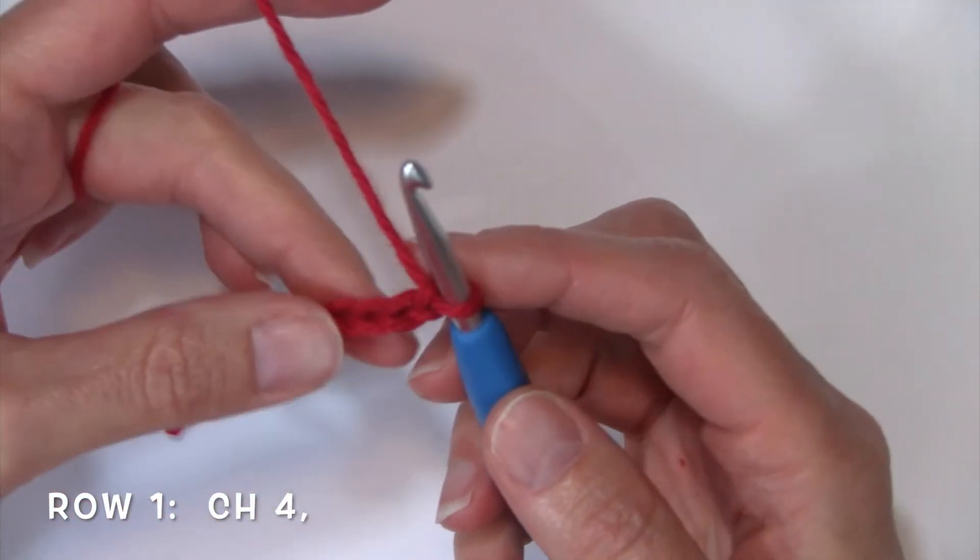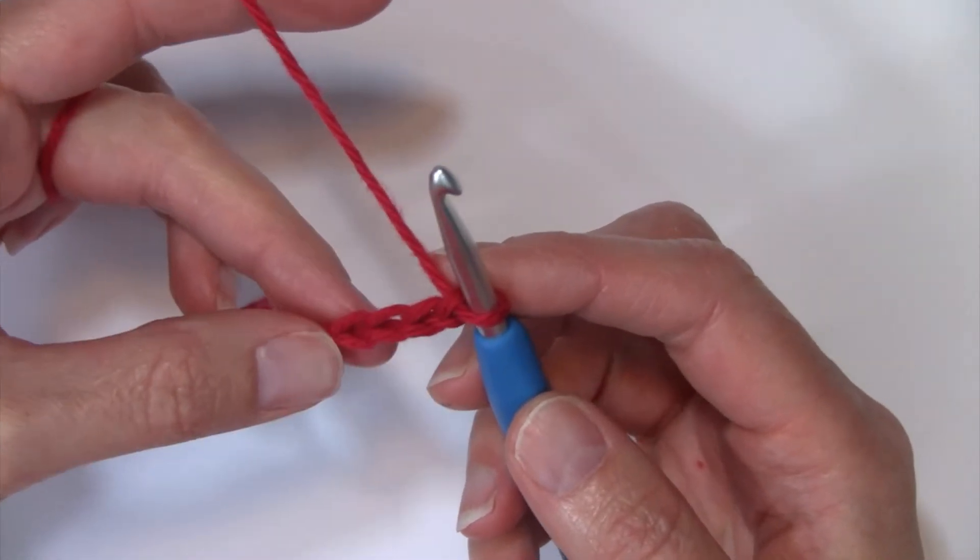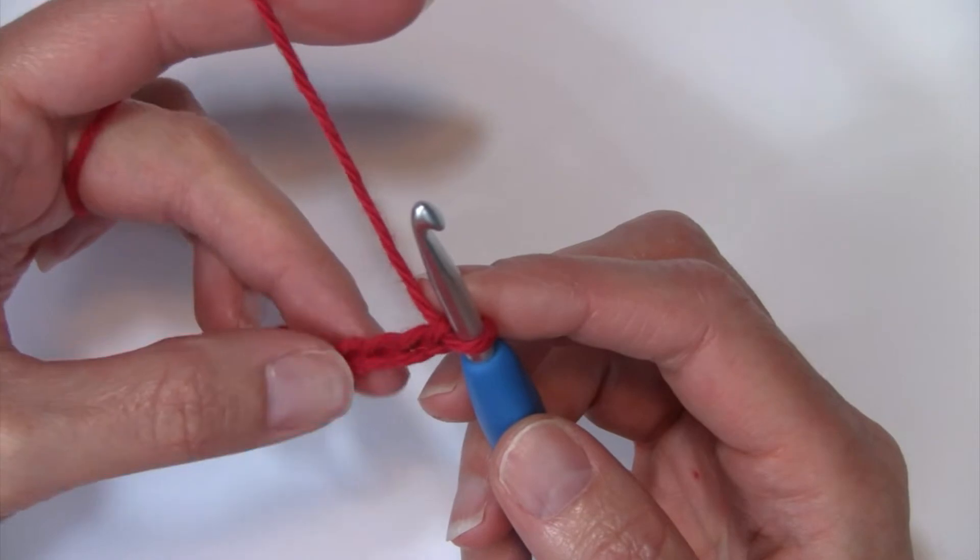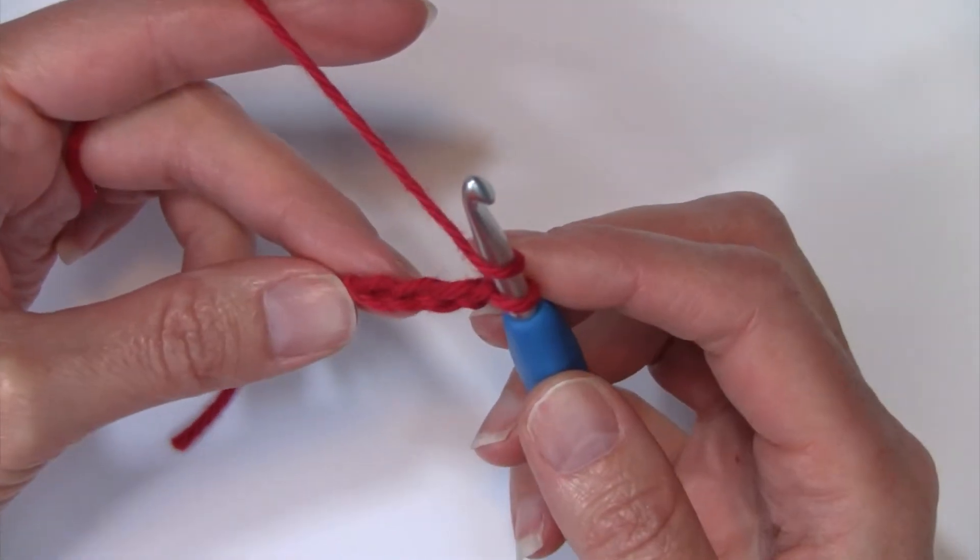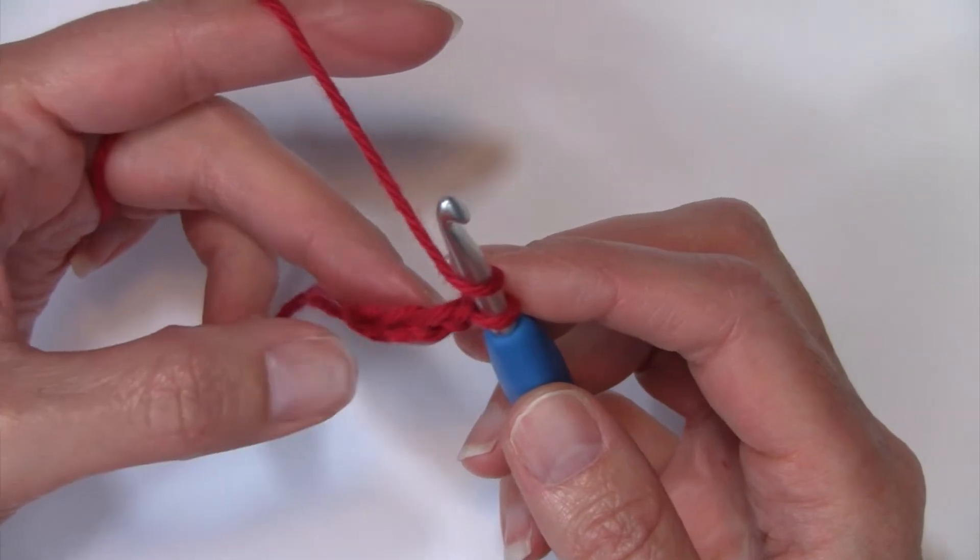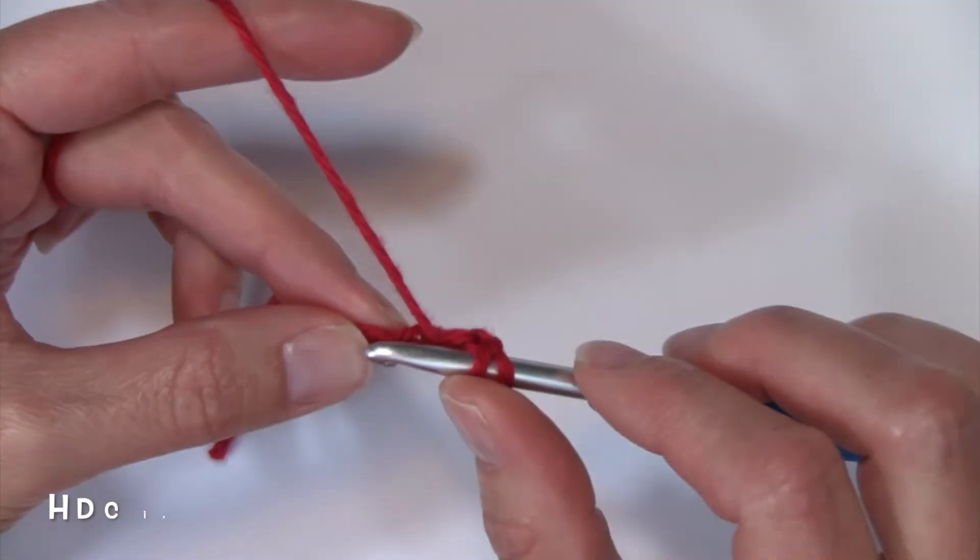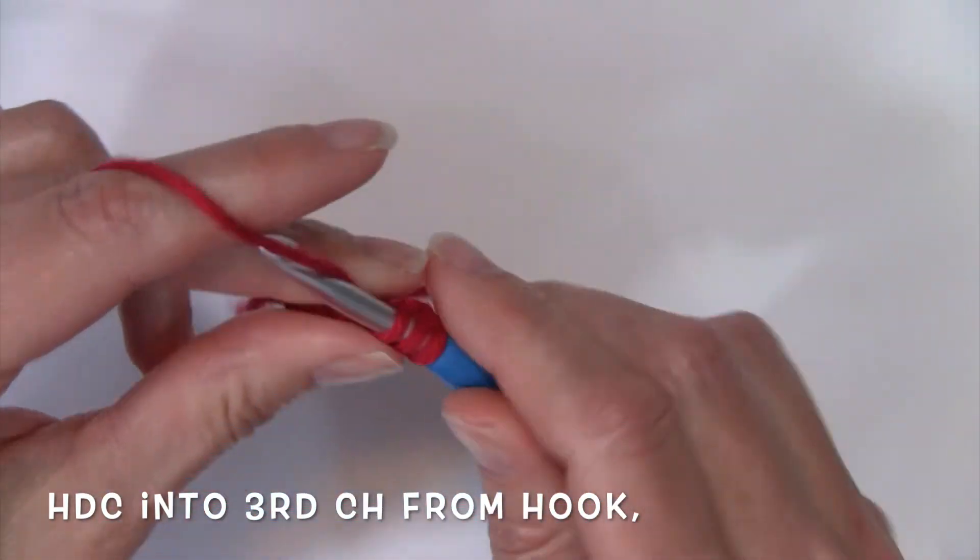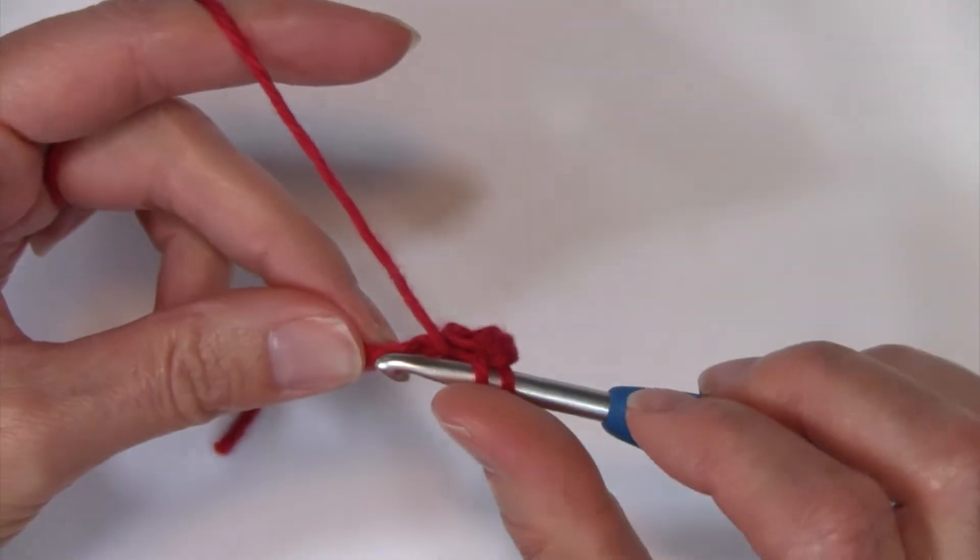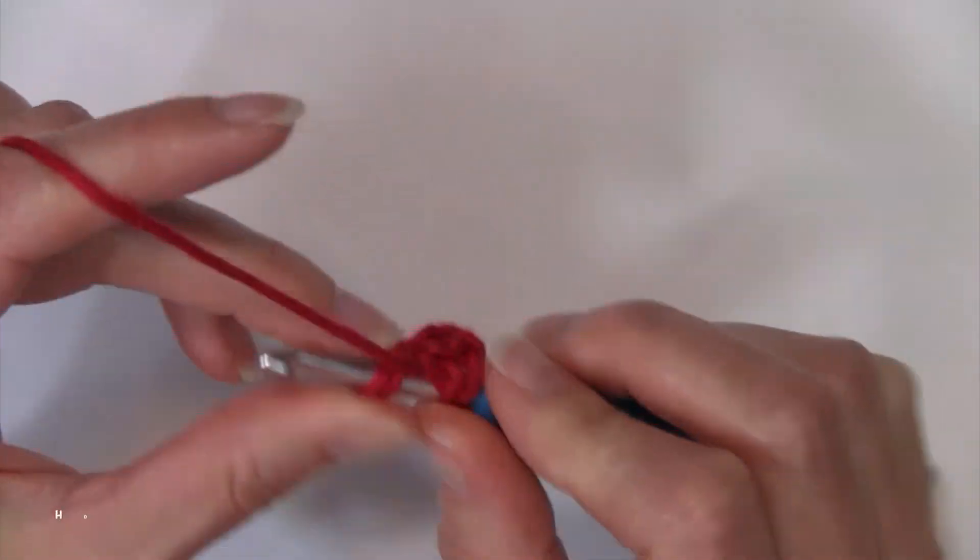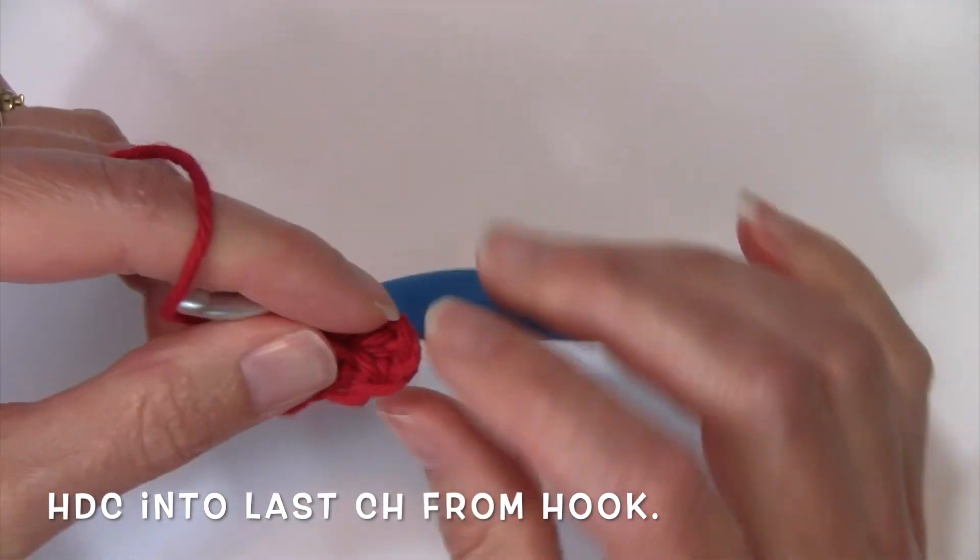If we were working a double crochet we would have chained six. So that's our first adjustment, our first adaptation for this mini corner-to-corner is a chain four. Then we're going to work two half double crochets into this chain. We're going to work our first one in the third chain from the hook and our final half double crochet will be worked in the last chain from the hook. So this is our first block made.